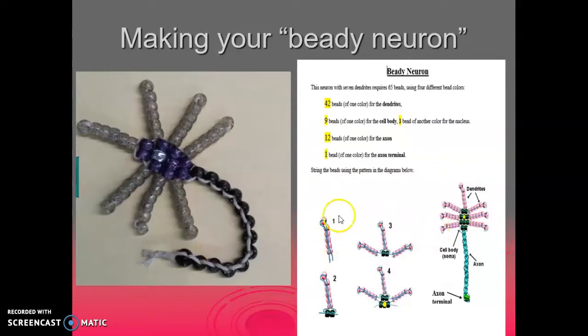The directions for how to do it are here, but I just want to help you get started. Sometimes students struggle with these first couple steps and then once they have the hang of it, it's usually pretty easy. So let me show you how to get started. First you need one grouping of 6 beads of your 42 color. So whatever color you're going to use for your dendrites.